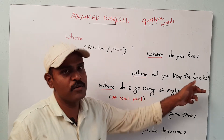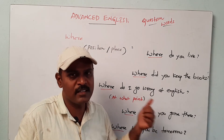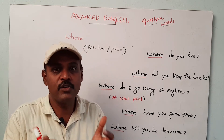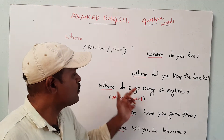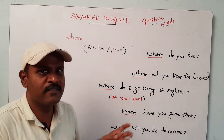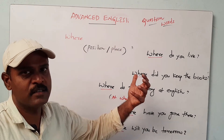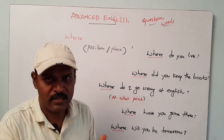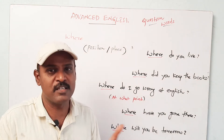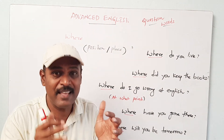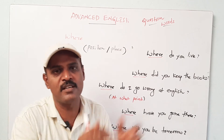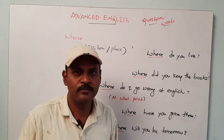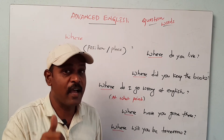Next: 'Where did you keep the books?' — it is in simple past tense. That means at what exact place did you keep the books? Next: 'Where do I go wrong at English?' — that means at what point, where exactly do I make mistakes in English? Next: 'Where have you gone there?' — I am asking the place, where have you gone?